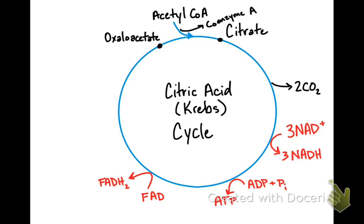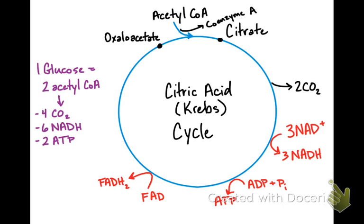Now remember this happens two times. You've got one glucose, so that means you have two acetyl-CoA's, so that means you would go through this cycle, or think about it as times two, so you get four carbon dioxide molecules in the citric acid cycle, six NADHs, two ATP, and two FADH2s.